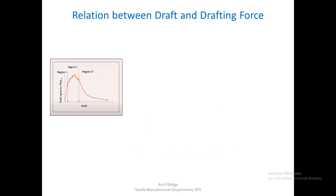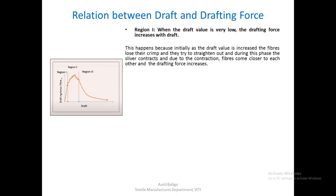This graph shows the relation between any draft value and the drafting force applied on fibers in that zone. The graph is divided into three regions, which we will study separately. In region one, the draft value is very low. As you keep increasing the draft, the drafting force — the resistance to fiber movement — goes on increasing.